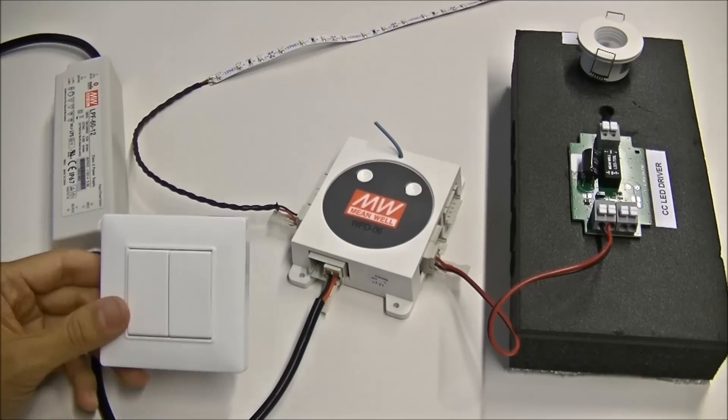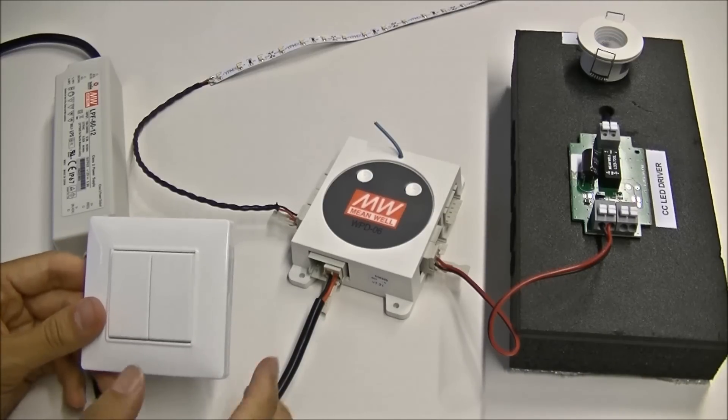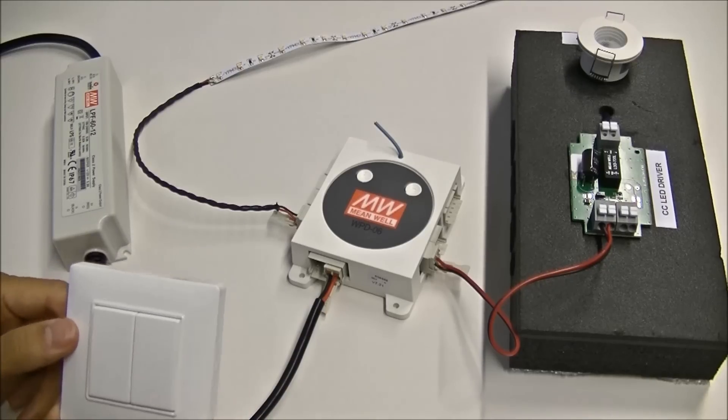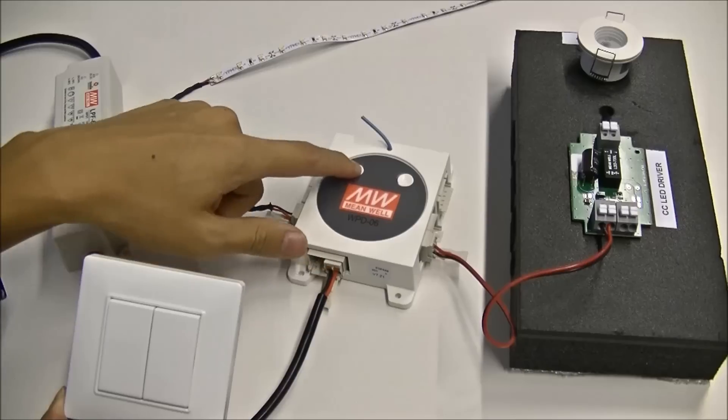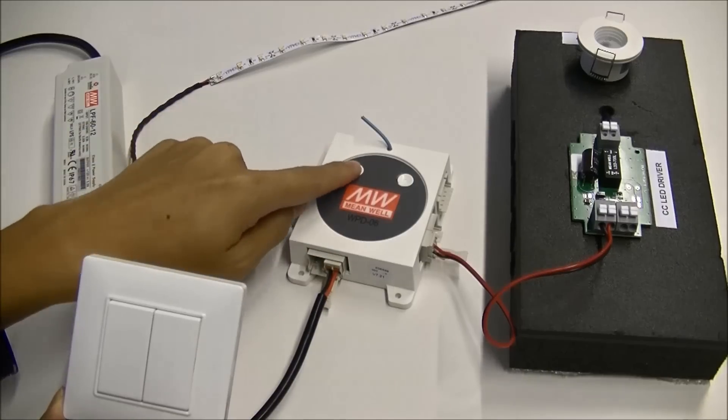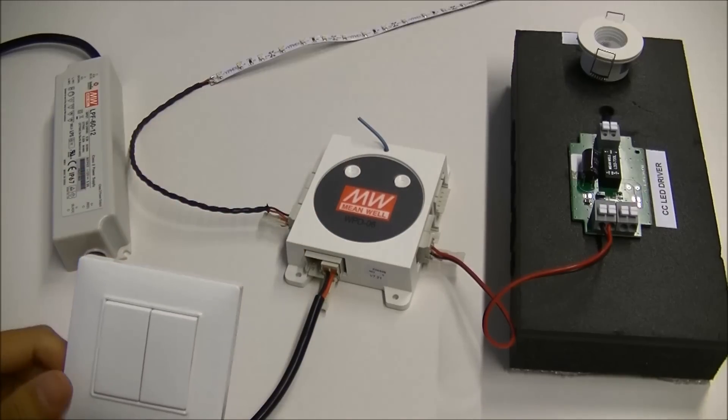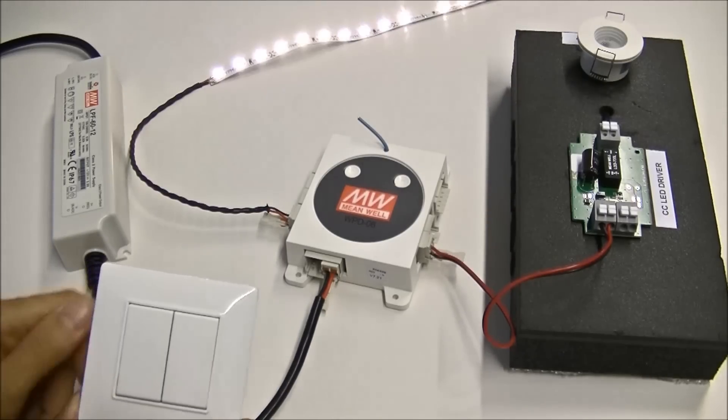Before the pairing, make sure LED driver or power supply is powered. Now press L button of dimmer. You will see channel 1 is now blinking. You can press the switch to set it as a turn on command.